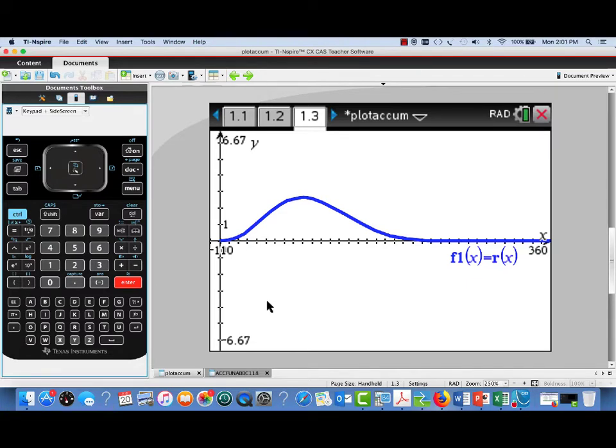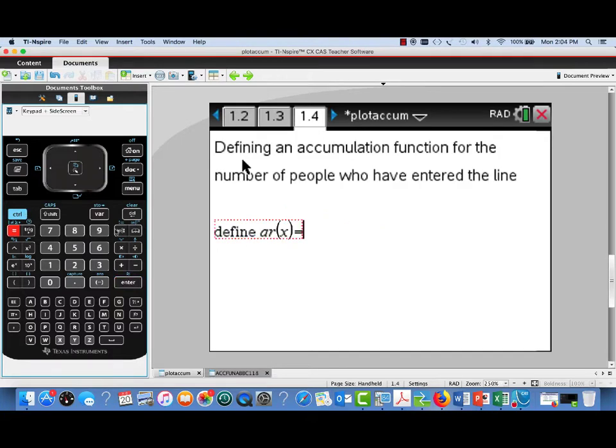Now, the questions in this problem had to do with accumulation functions. For example, we're asked to find the total number of people who've entered the line for the escalator during the time interval from 0 to 300 seconds. To do this, we're going to set up an accumulation function.